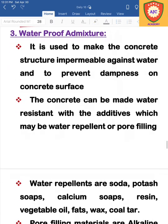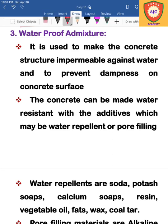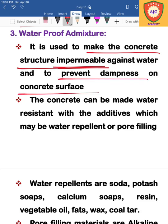The next admixture is the waterproof admixture. When we mix this admixture into concrete, the concrete structure becomes impermeable. It will prevent water penetration, and the concrete resists all moisture content, preventing dampness and evaporation harm.